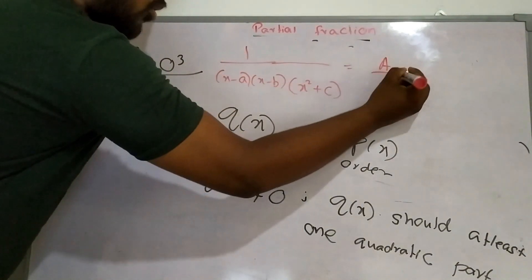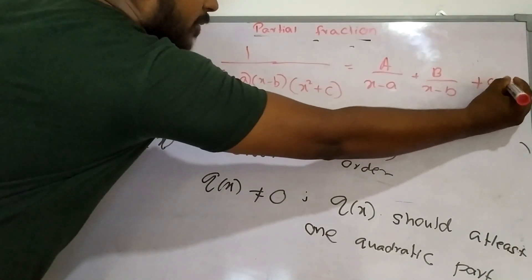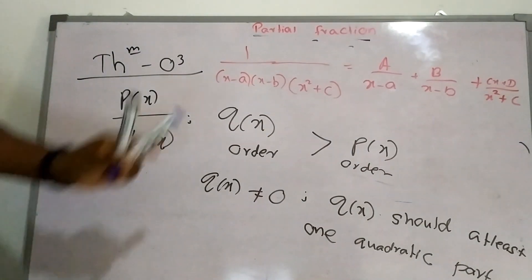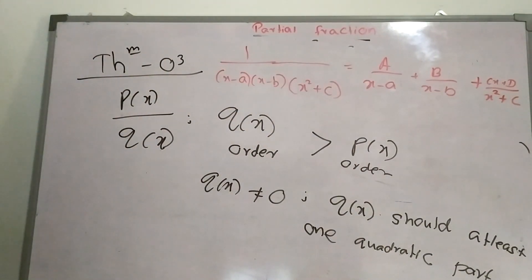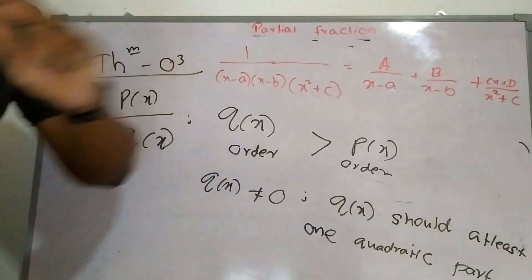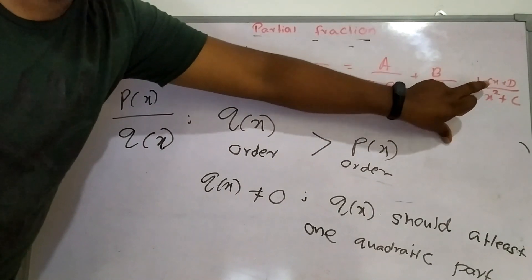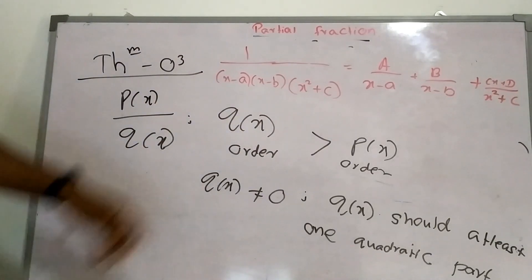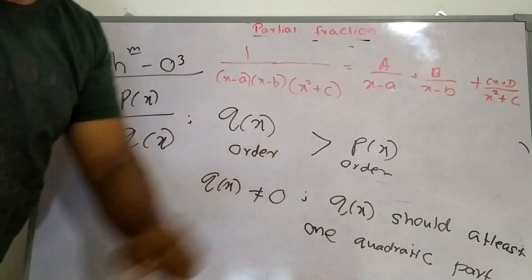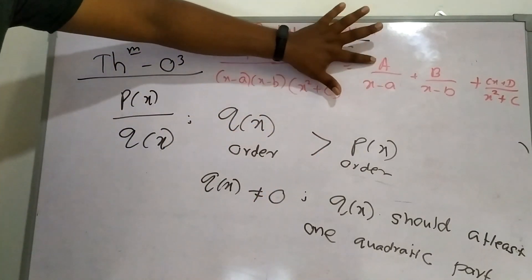Therefore, the partial fraction will be A over (x minus a) and B over (x minus b), just like the first tier. But the next term should be (cx plus d) divided by (x squared plus c). If the denominator factor is cubic, the numerator should be quadratic (cx squared plus dx plus e). If it is fourth order, the numerator is third order, and so on. If it is second order, the numerator is linear.